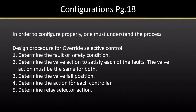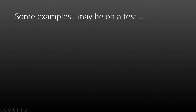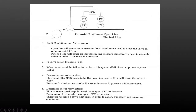Here's a quick example. We have a pump with a discharge line that has a flow transmitter and a pressure transmitter on it. Potential problems are an open line — a pipeline rupture — or a pinch line, such as someone running over it with a trackhoe. First, identify the fault conditions and valve action.